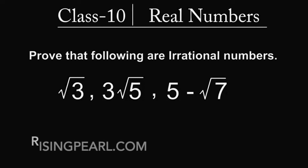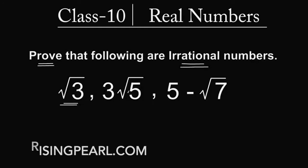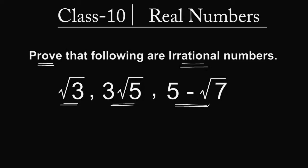Hello and welcome. This is CBSE class 10 daily math video, and in today's video we are going to learn how to solve problems where we prove that the following numbers are irrational numbers — numbers such as square root 3, 3 times square root 5, and 5 minus square root 7.